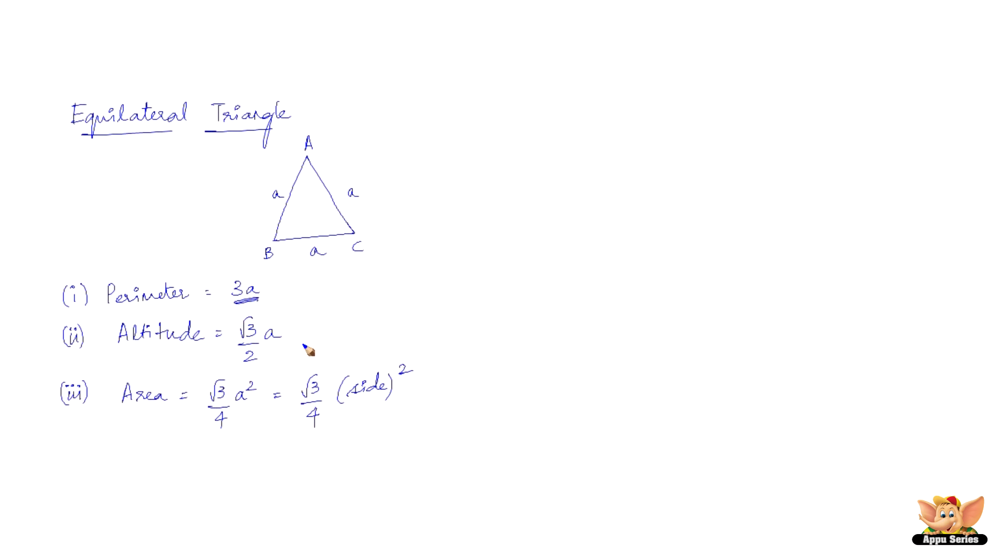Now the altitude. Why do you need the altitude? Altitude is the height. Again same as the isosceles triangle, because area is ½×base×height, so we've got the base as a but the height is something we don't have. We need to find out. Considering this right angle triangle we've got side a and this is a/2. Using the Pythagoras theorem we get height as √3/2×a.